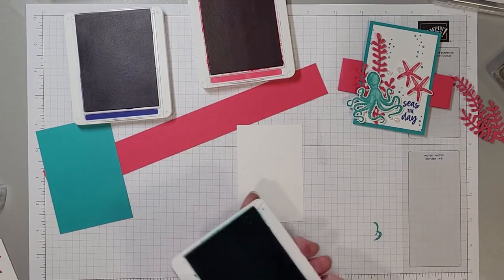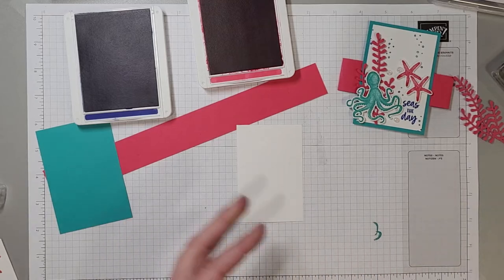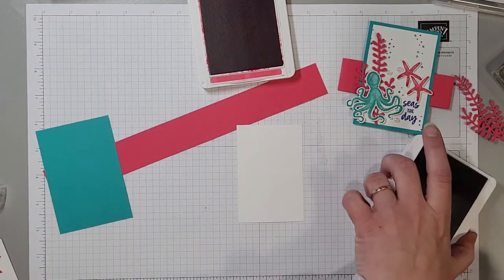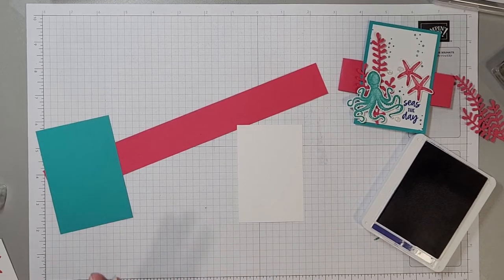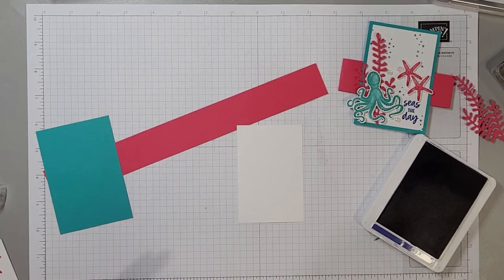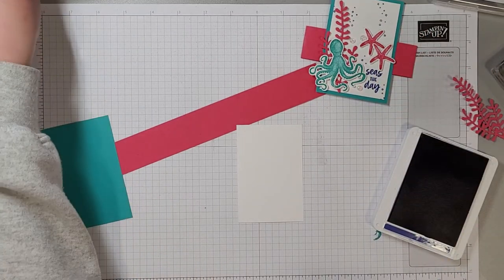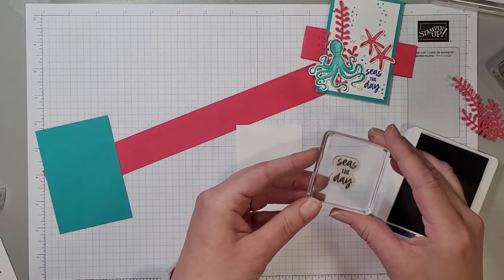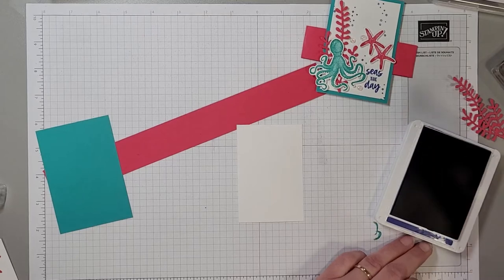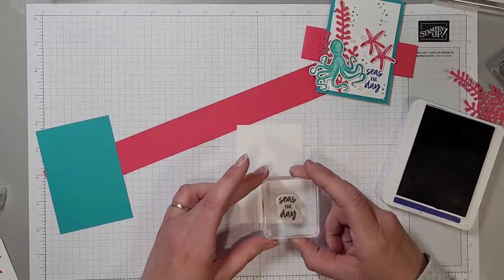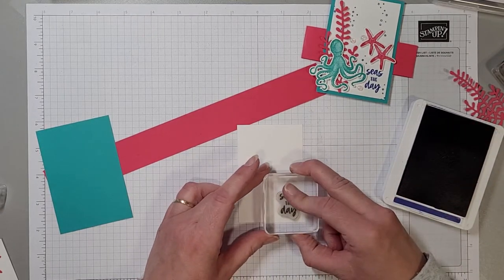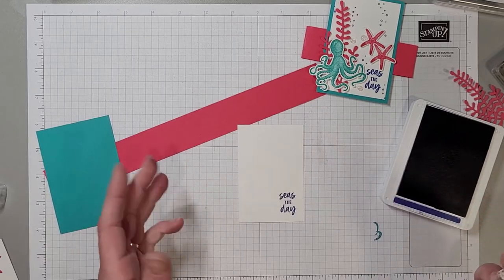Now we'll do our stamping on this feature piece of our belly band and for that we're going to need the Starry Sky. I'm going to stamp the Seize the Day in the corner down here.